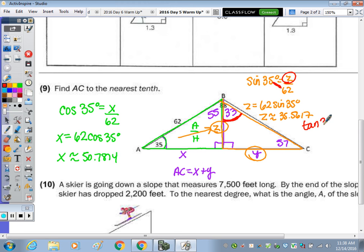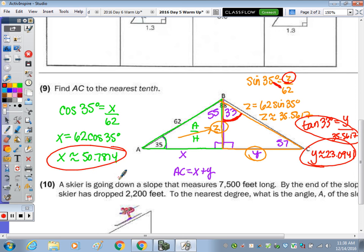So the tangent of 33 equals y over z, which was 35.5617 rounded. So now I just need to do that cross product to find y. And we get y is approximately 23.0941. Adding the y together with the x, AC is approximately 73.9.